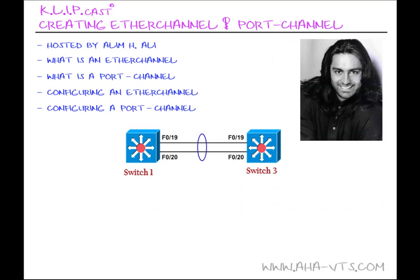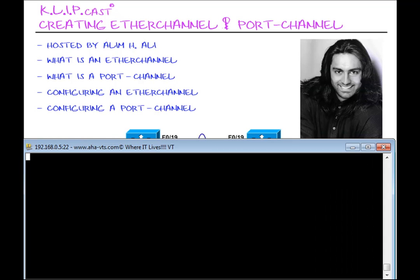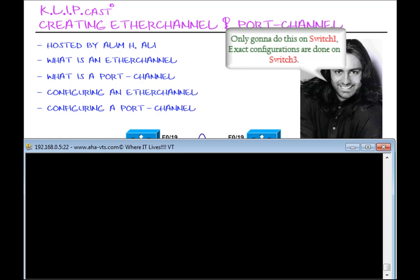Let's go ahead and configure a Port Channel. We're going to use the same diagram, but I'm going to add the IP address 10.10.10.1/24 to the Port Channel 1 interface on Switch 1, and the IP address 10.10.10.3/24 to the Port Channel 1 interface on Switch 3. Nothing has changed from the previous slide except the addition of IP addresses to the port channel interfaces on those switches.